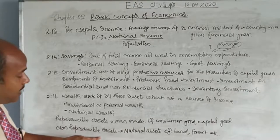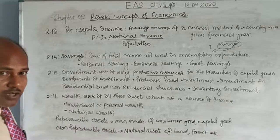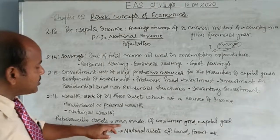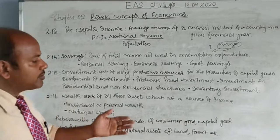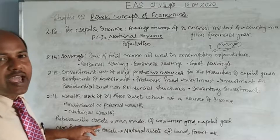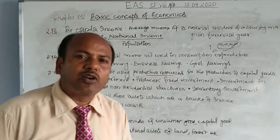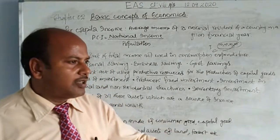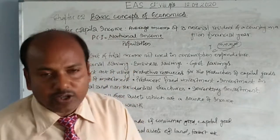The last concepts are reproducible assets and non-reproducible assets. Reproducible assets are man-made assets — things that have been made useful by humans, such as buildings, consumer goods, producer goods, tools like hammers and nails. Non-reproducible assets refer to those assets over which human beings have no control of production — humans cannot produce them. Examples include land, minerals, and forests.